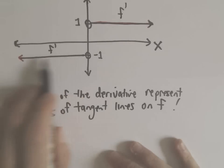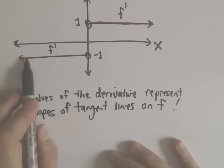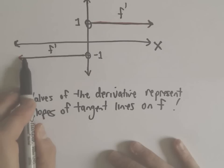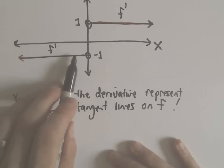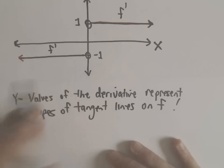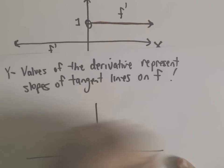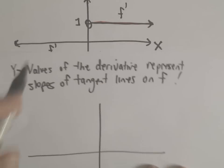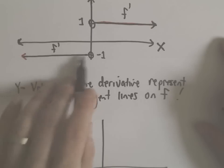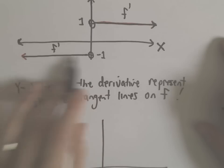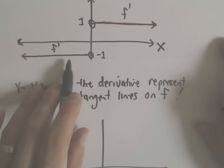So what this graph tells me is that for x-coordinates less than 0, the slope of the tangent line is always equal to negative 1 — it never changes. So you have to ask yourself: what kind of graph would have a tangent line with slope always equal to negative 1? Or equivalently, what would you have to take the derivative of to get negative 1?